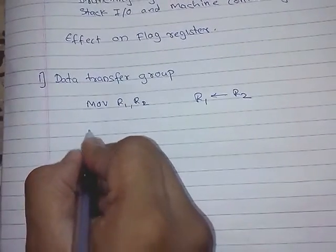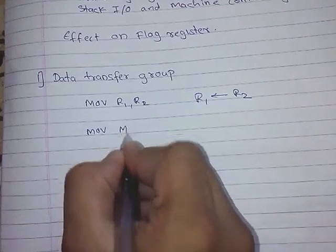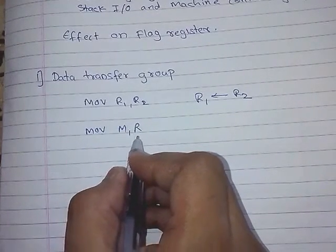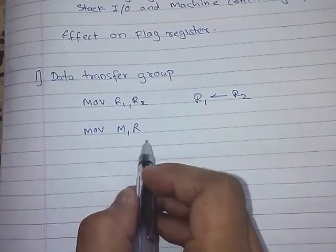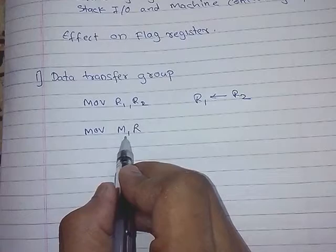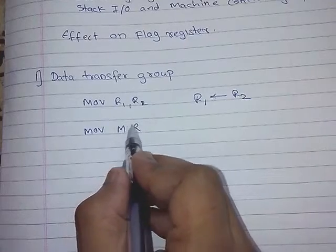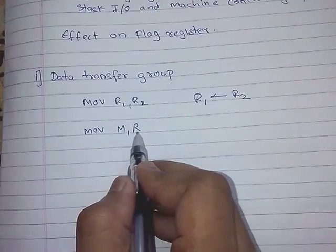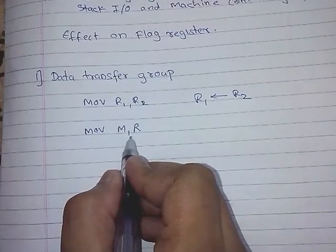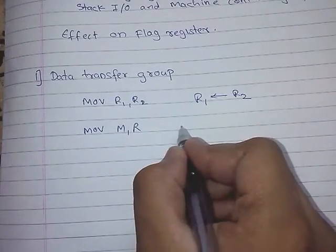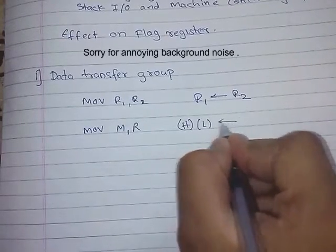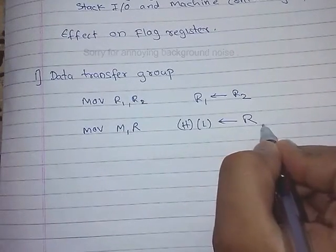Next: MOV M, R. After the execution of this instruction, the data from this register will go into the memory location where M holds the address stored in the H-L register pair.